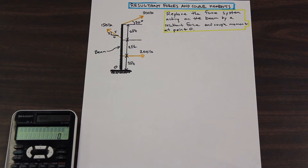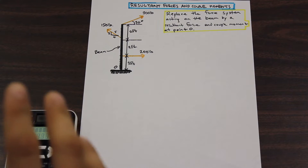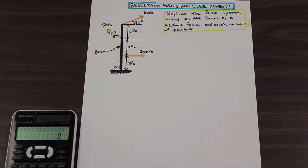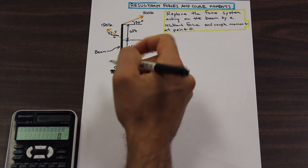In the last videos we showed you how to find the resultant forces. In this video we are going to show you how to take all those forces, translate them to a point, and then at that point calculate the resultant moment or the couple moment. So let's go ahead and start — this question is asking us to replace the force system acting on the beam by a resultant force and couple moment at point O.